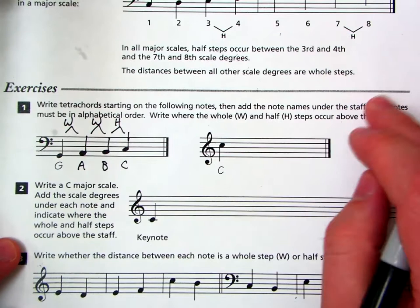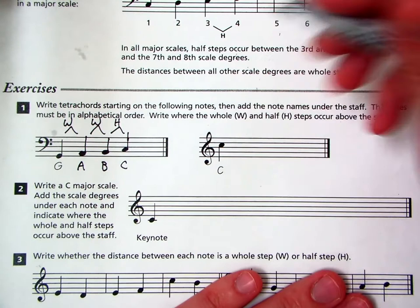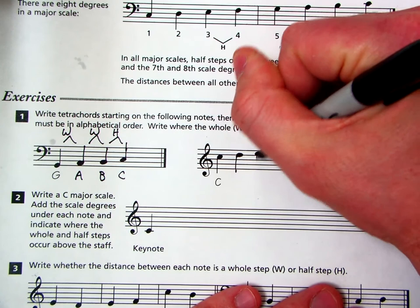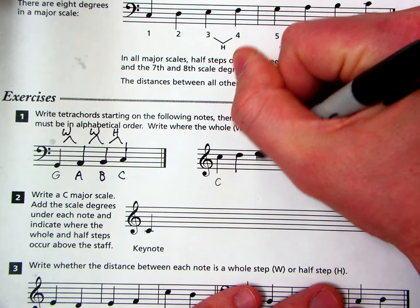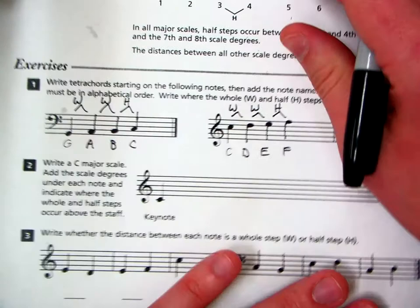Now, you can refer back up for this next one, but I'm just going to do it here on the paper. So we start on C. C is our key note. So our next note has to be a D. That's a whole step away. E is a whole step away from D. And then F is a half step away from E. So C, D, E, F. And then if we label the steps, we have whole step, whole step, half step.